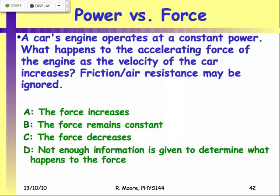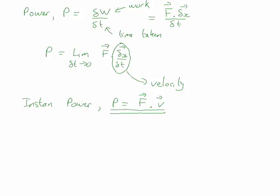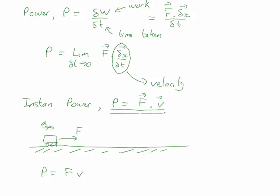So what's going on here? We've got a constant power. We've got our car modeled as a block with an accelerating force acting on it, causing it to move forwards. The power of the force is F dotted with V. Since they're parallel, we just multiply the magnitudes. The velocity here will increase, but the power is constant. So the force must decrease in order to keep this product constant.